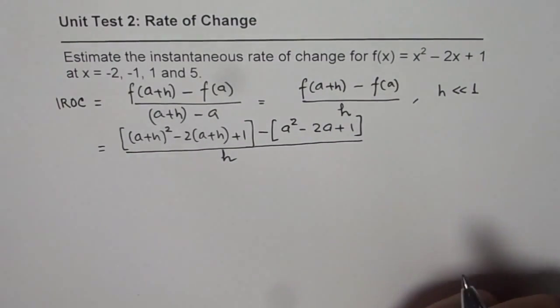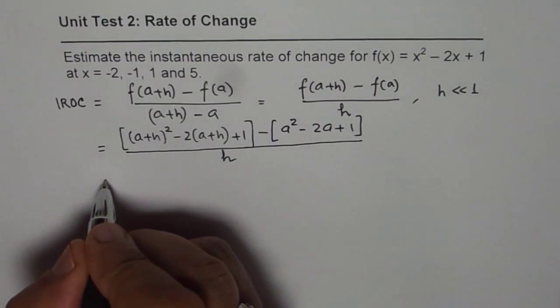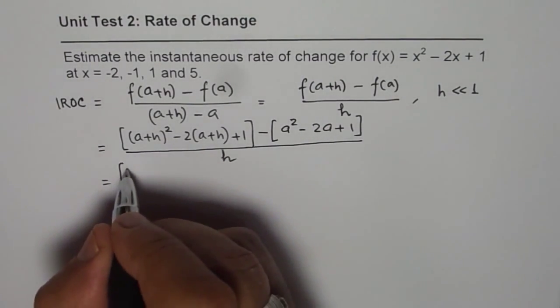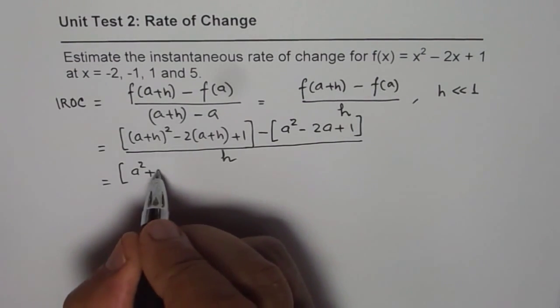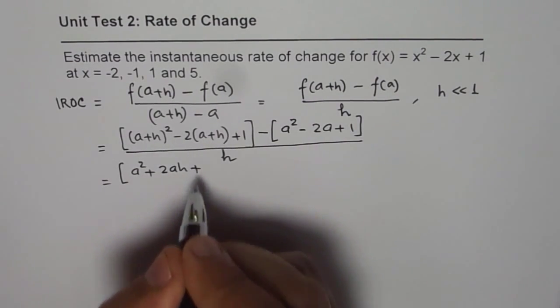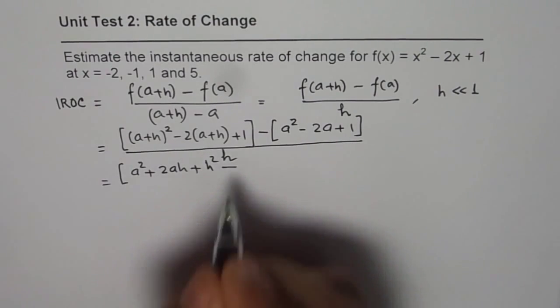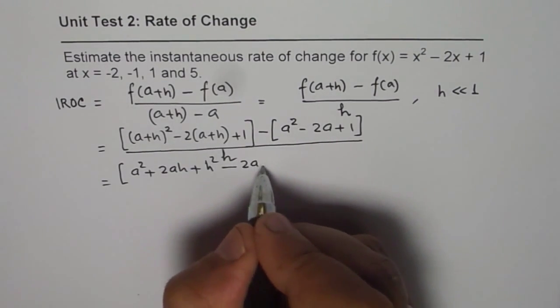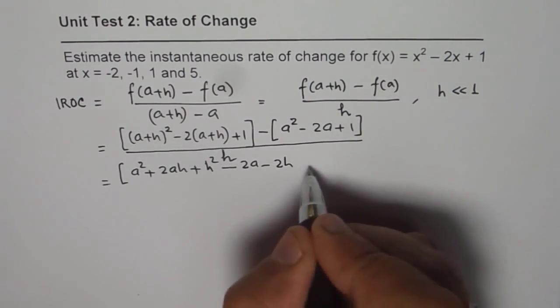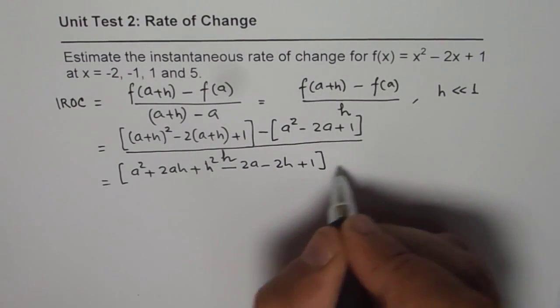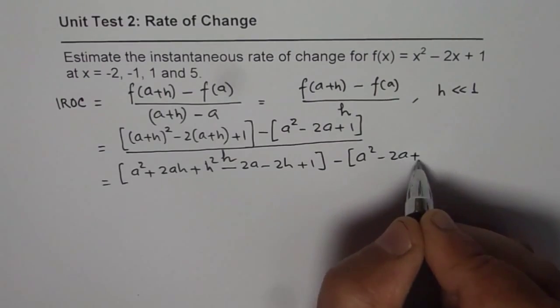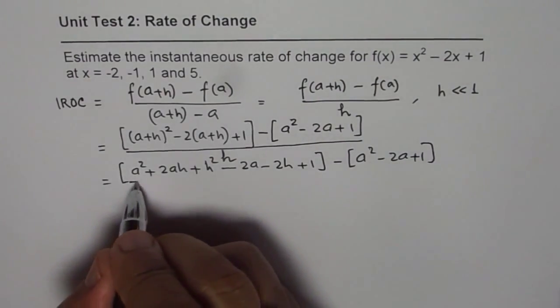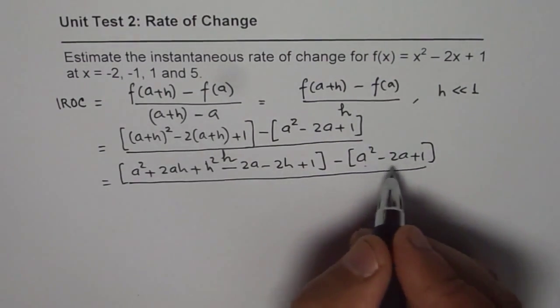Now let us expand. When you expand this you get a² plus 2ah plus h² minus 2a minus 2h plus 1, take away a² minus 2a plus 1. You'll find that these three terms will cancel out.